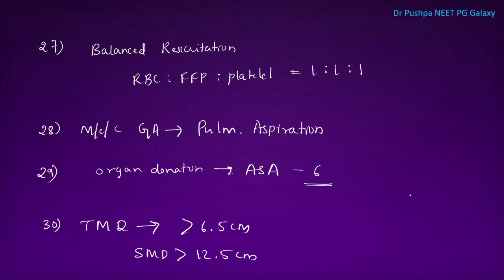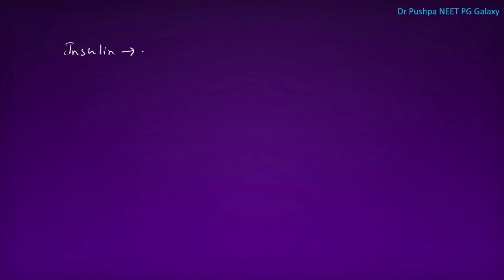These are a few important points from anesthesia for upcoming exams. Regarding perioperative drug management: for oral hypoglycemics or insulin, the morning dose should be omitted on the day of surgery. Low molecular weight heparin must be stopped at least 12 to 14 hours before surgery, whereas unfractionated heparin can be given up until 6 hours before surgery.